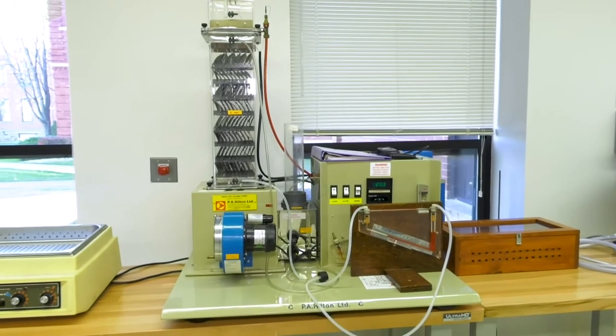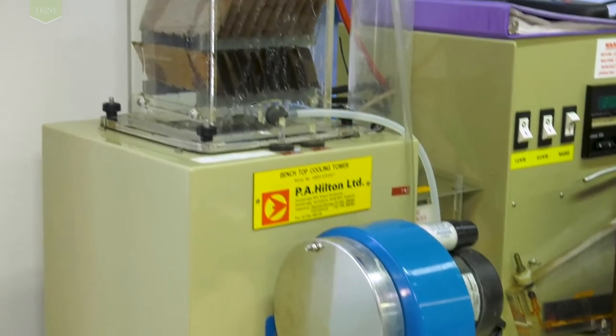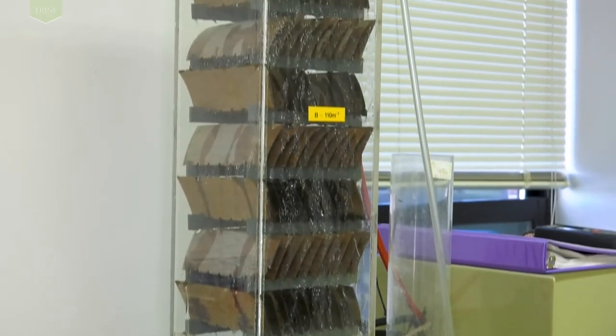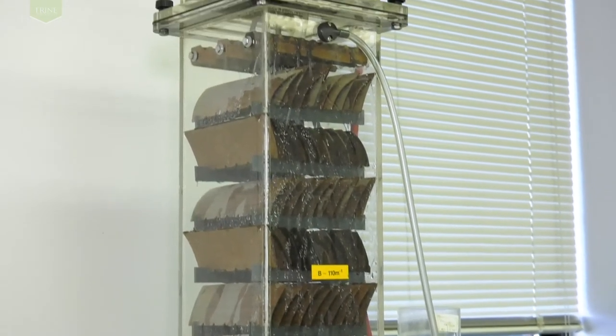The PA Hilton cooling water tower allows students to vary cooling load and airflow rate while measuring water temperatures and pressure drops to calculate wet bulb approach temperatures, required height, and heat transfer coefficients for a forced draft cooling tower system.